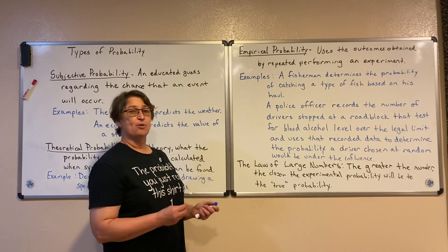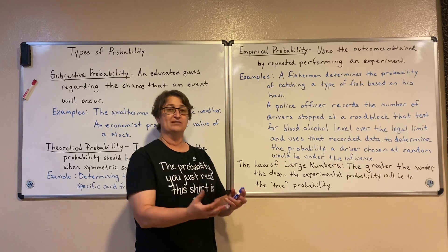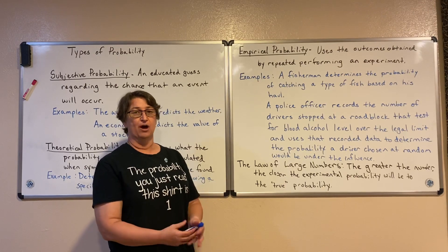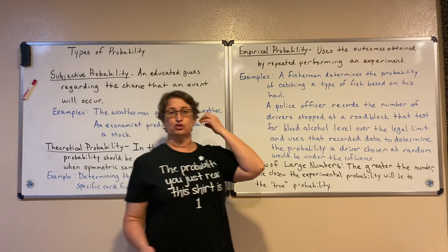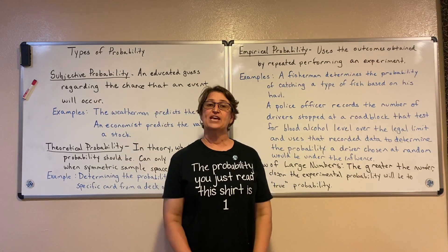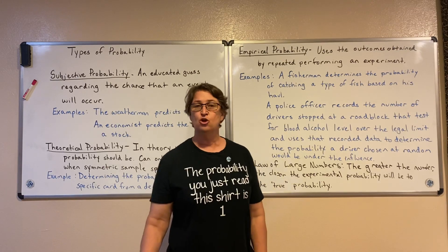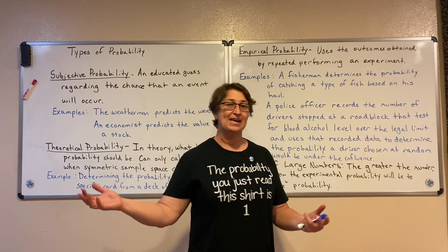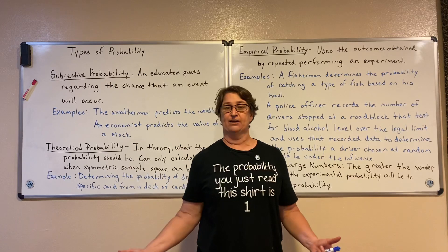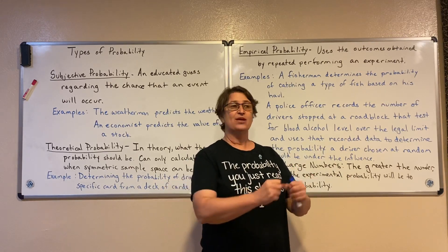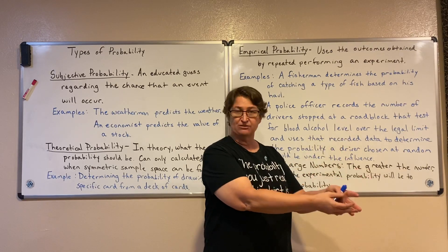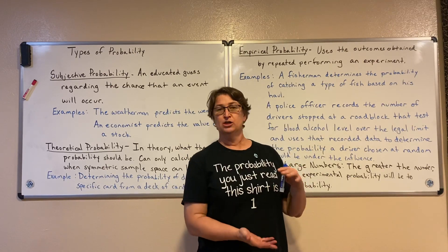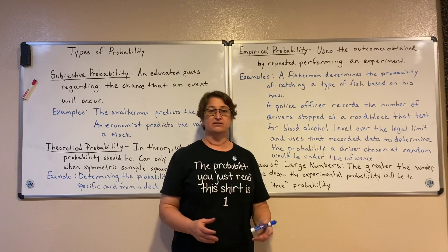Empirical probability is the probability based upon running an experiment and collecting data. We then use that data to determine the probability. For instance, a fisherman wants to determine the probability of catching a particular type of fish. If we tried to use theoretical probability, we would have to drain the lake, find all the different fish, and know how many bass are in the lake to tell you the actual theoretical probability of catching a bass.